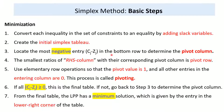In the case of Minimization, we locate the most negative of the Cj minus Zj row to determine the pivot column, whereas for Maximization we locate the most positive. The fourth step is the same: the smallest ratio of the RHS column to the corresponding pivot column gives the pivot row. The fifth step uses elementary row operations so that the pivot value is 1 and all other entries in the entering column are 0. The sixth step: if all Cj minus Zj are greater than or equal to 0, this is the final table and we can get the optimal solution. For maximization, Cj minus Zj should be less than or equal to 0.